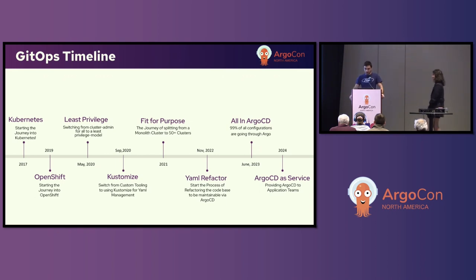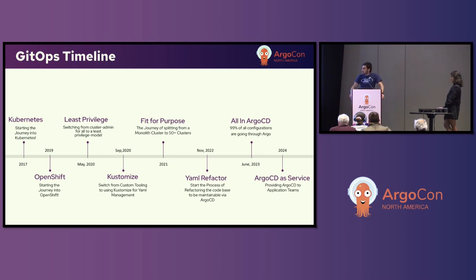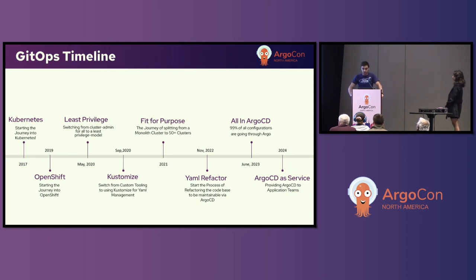Ford started their journey into Kubernetes back in 2017 with CoreOS and Tectonic. Later, when it was acquired, we switched over to OpenShift. Around May 2020, we started to become more production-ready with OpenShift, and learning the hard way, we figured that we needed to switch our permission model to a more least-privileged approach.